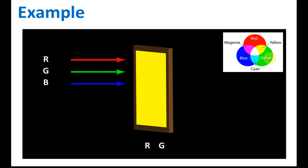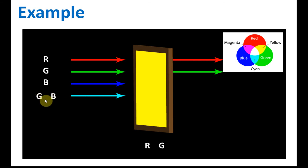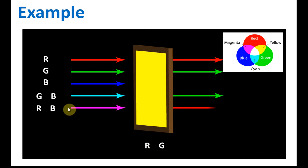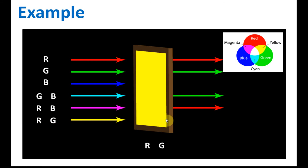For the yellow filter — yellow is the combination of red and green — so only red and green are allowed to come out and blue will be blocked. If cyan comes in — cyan is green and blue — only green is allowed to pass through. Magenta is red and blue — only the red is allowed, blue will be blocked, so red light comes out. Yellow in, yellow out because the filter is yellow. That is the principle of how the filter works: a filter only allows the light with the same color to pass through.